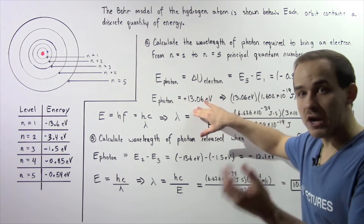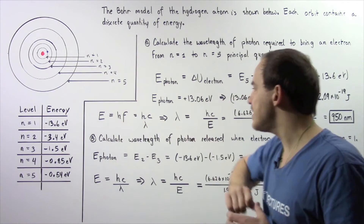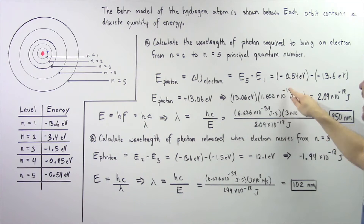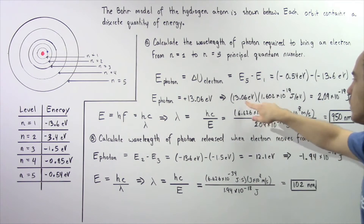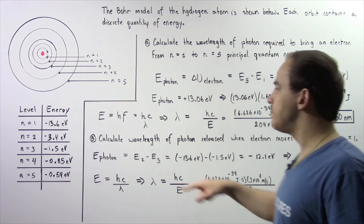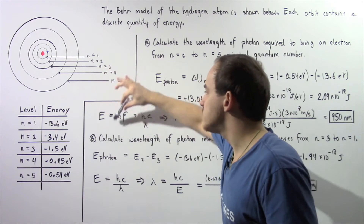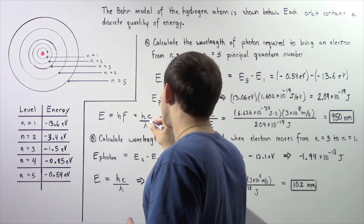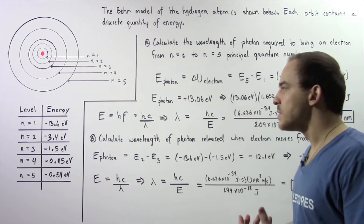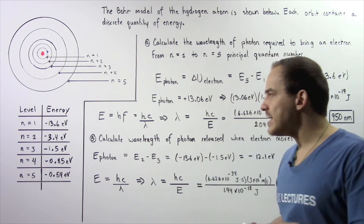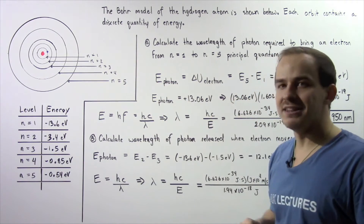Now let's convert from electron volts to joules, because when we apply this equation we have to use joules. We know that 1.602 times 10 to the negative 19 joules are found in one electron volt. So we multiply 13.06 electron volts by this; the electron volts cancel and we're left with 2.09 times 10 to the negative 19 joules. Now we apply the equation: the energy our photon has, E, is equal to h multiplied by f, where f is the frequency. We don't want the frequency — we want the wavelength. The speed of light c equals frequency multiplied by wavelength, so we can replace the frequency with c divided by lambda.